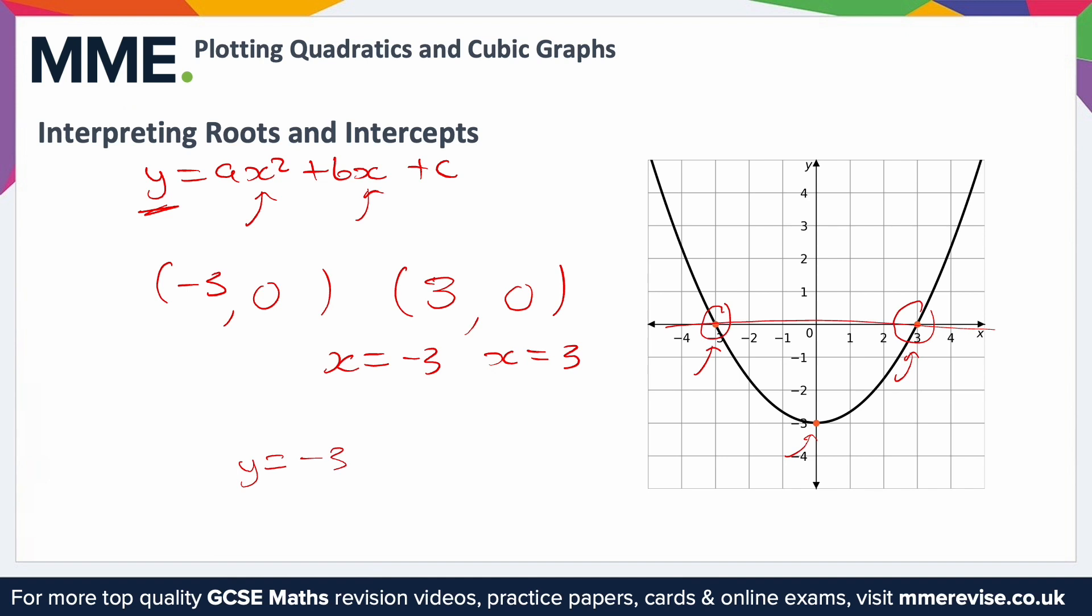Which is normally the value on the end of the quadratic. So for example, in this case it's plus c that would be minus three. So just the constant on the end which shifts the graph up or down will be minus three on this one.